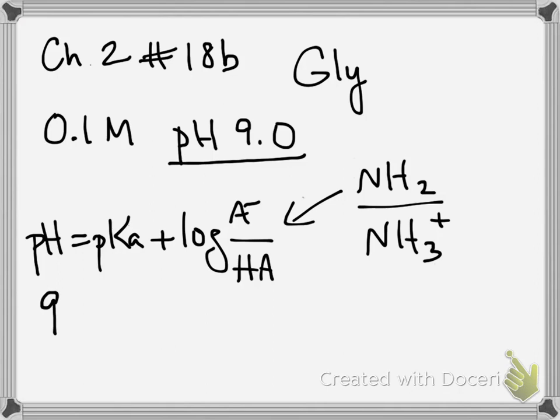Then I plug in 9 for the pH, and the pKa, you were told, is 9.6 plus log of NH2 over NH3 plus.